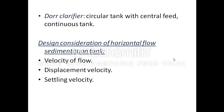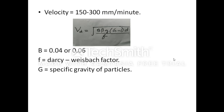For the design considerations of the horizontal flow sedimentation tank, the velocity of flow should be such that suspended particles can settle down. The velocity is generally taken as 150 to 300 mm per minute. According to Kemp, the displacement velocity is given by: Vd = √(8β·g(G−1)·d / f), where β = 0.04 or 0.06, f is the Darcy-Weisbach factor, and G is the specific gravity of particles. The velocity must be such that settled particles are not lifted back up.